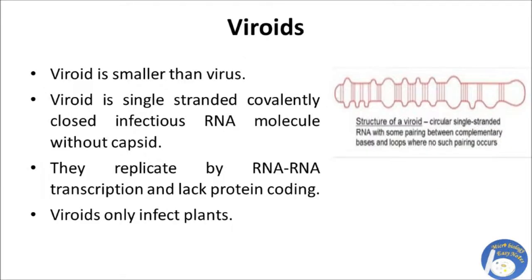Viroid is smaller than a virus. Viroid is a single-stranded, covalently closed infectious RNA molecule without a capsid. Viroids replicate by RNA-RNA transcription and lack protein coding. Viroids only infect plants.